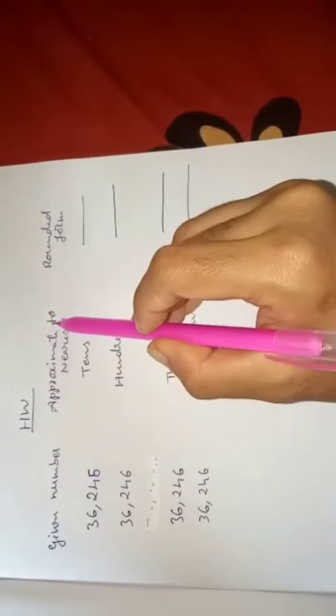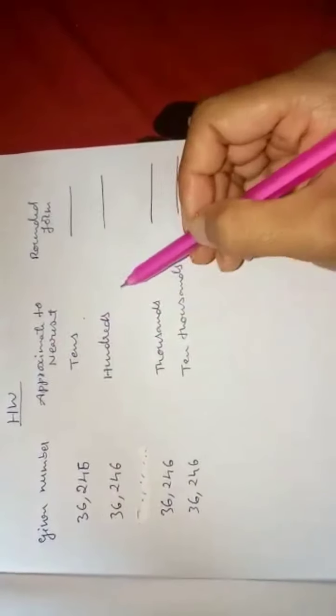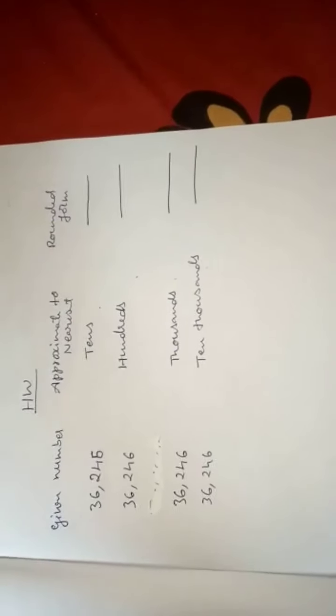Students, take down this homework: given number is 36,046. Approximate to nearest rounded form for tens, 100, 1000, and 10,000. Do this homework in your homework book. Thank you — see you next time.